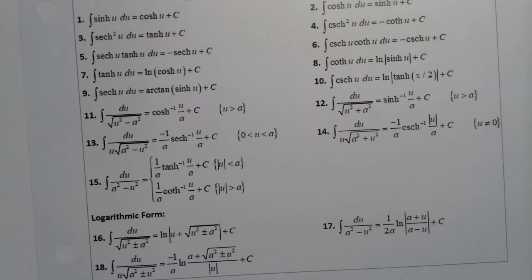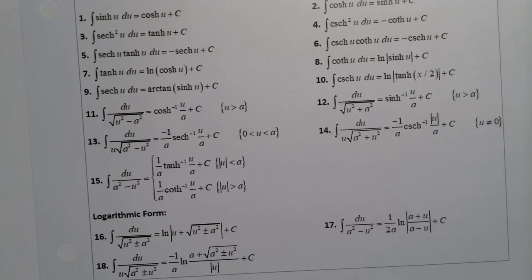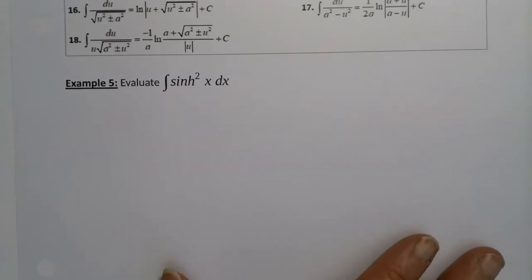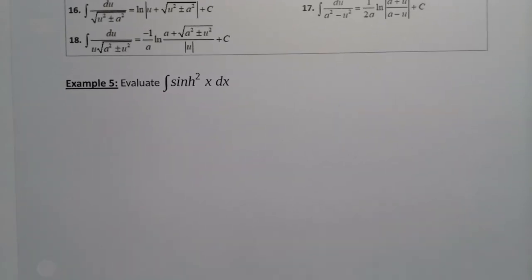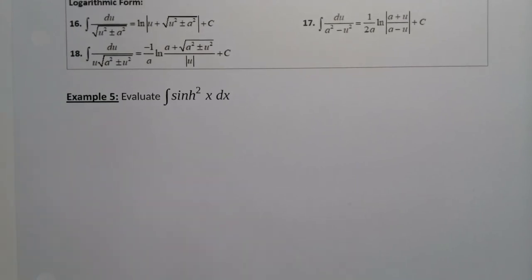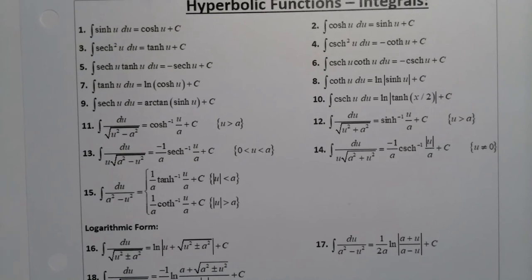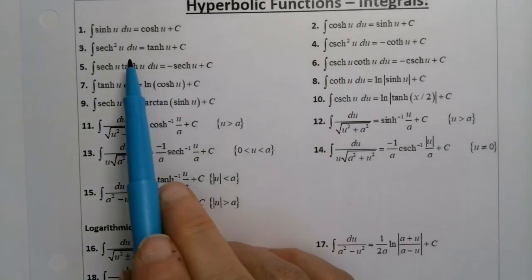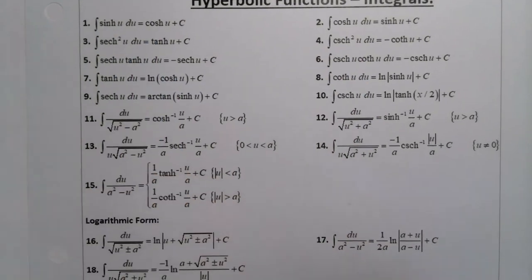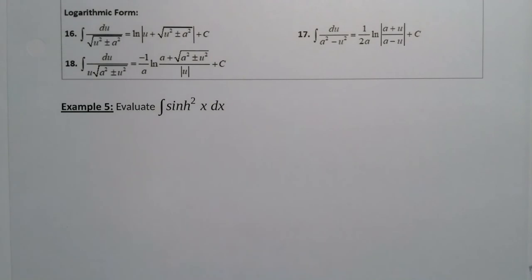Let's use them to find the integral of sinh²(x) dx. Now sinh² is setting off a little bell in my head — I don't actually have that one as one of my integrals. If you look, I have cosech² and sech², but I don't have an integral for sinh².